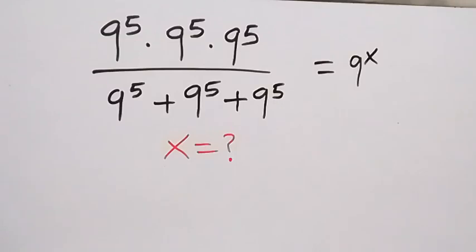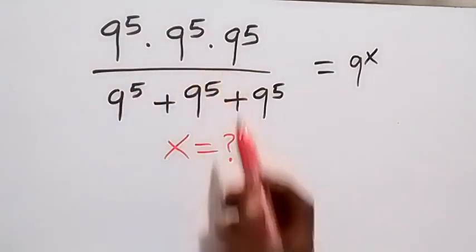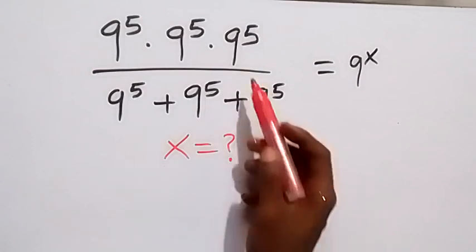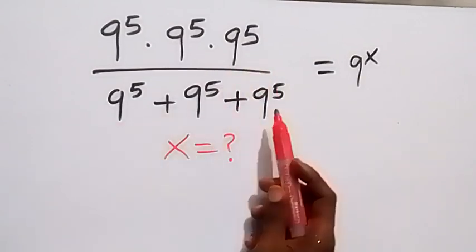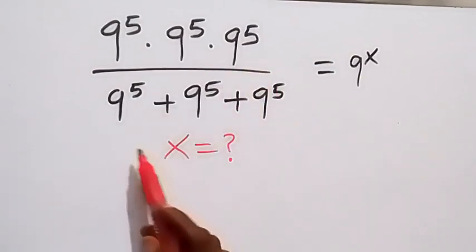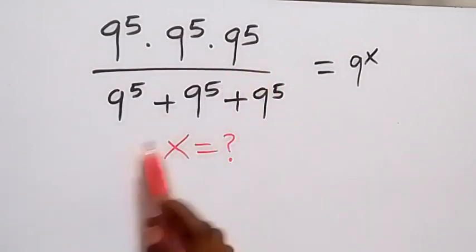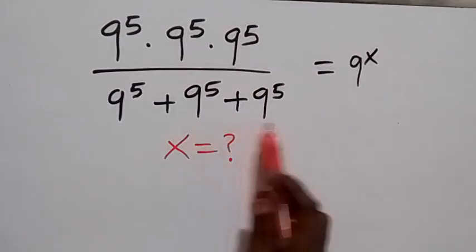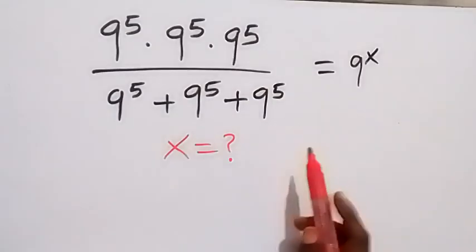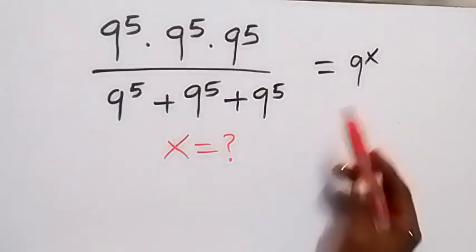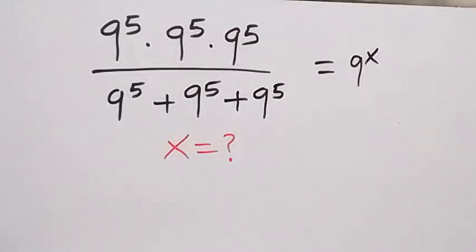Hello, you are welcome. How to find the value of x in this nice Olympiad problem. From here we have n raised to power 5 times n raised to power 5 times n raised to power 5, divided by n raised to power 5 plus n raised to power 5 plus n raised to power 5, equals 9 to the power of x.